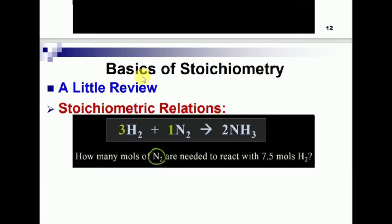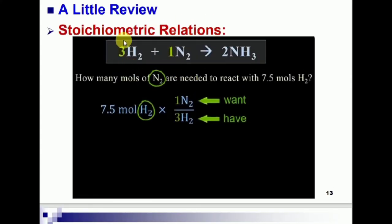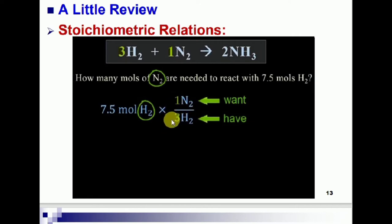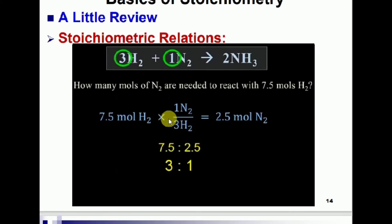The 'have' quantity goes in the denominator and the 'wanted' quantity goes in the numerator. So 1 mole N2 over 3 moles H2 — this is the stoichiometric ratio. Given 7.5 moles of hydrogen, you multiply: 7.5 × (1 N2 / 3 H2) = 2.5 moles of nitrogen. Therefore, 7.5 moles of hydrogen reacts with 2.5 moles of nitrogen. The stoichiometric ratio is always constant.